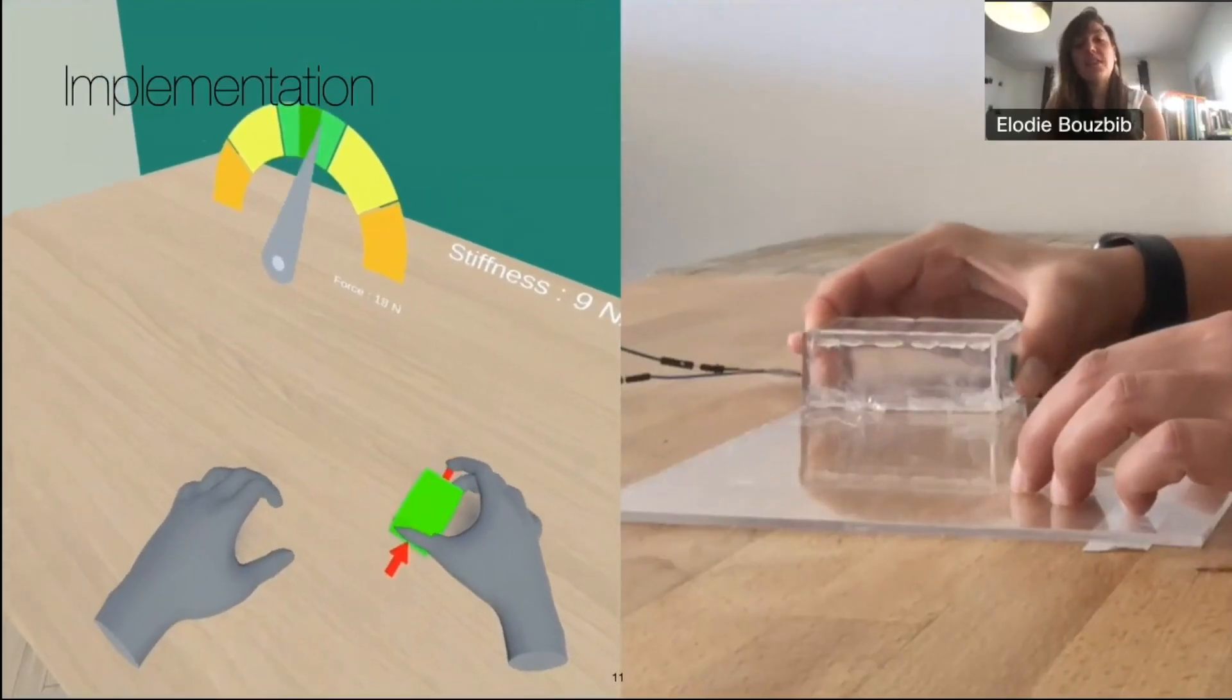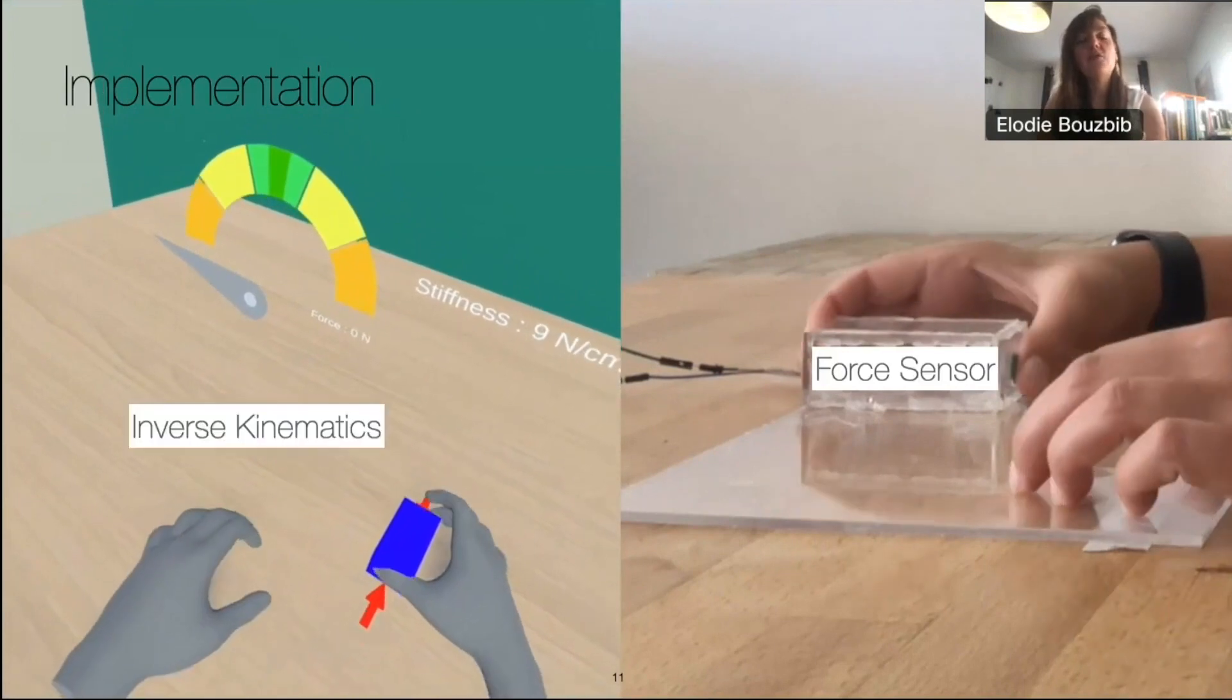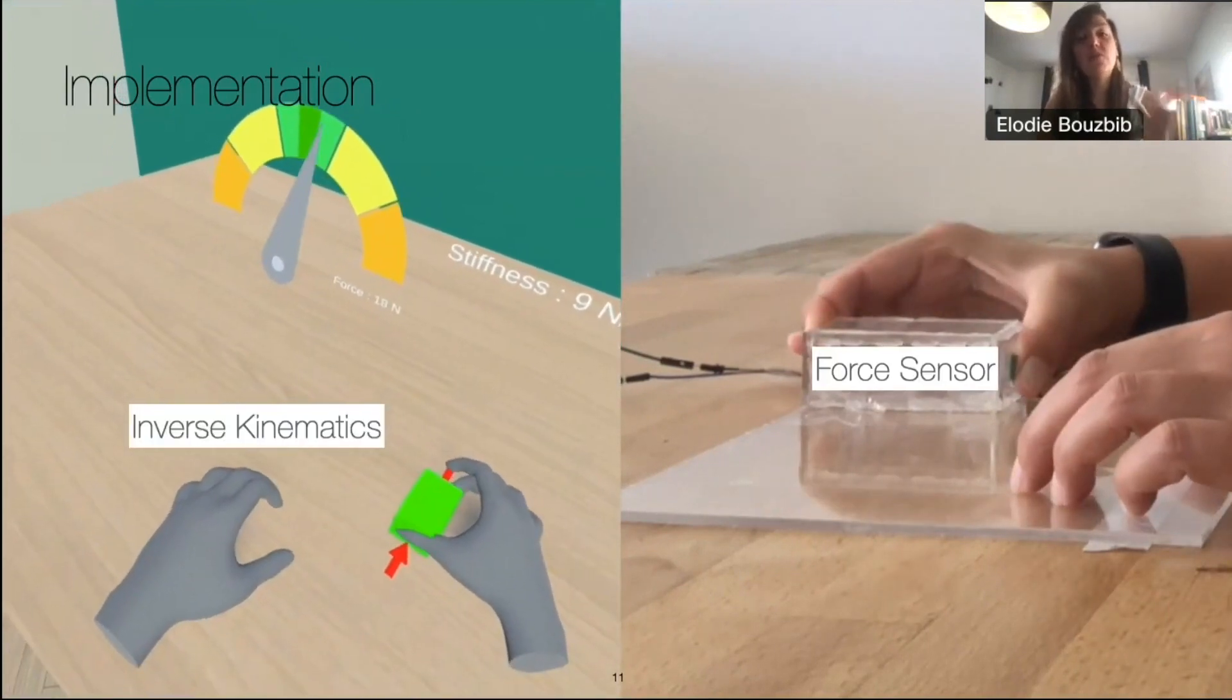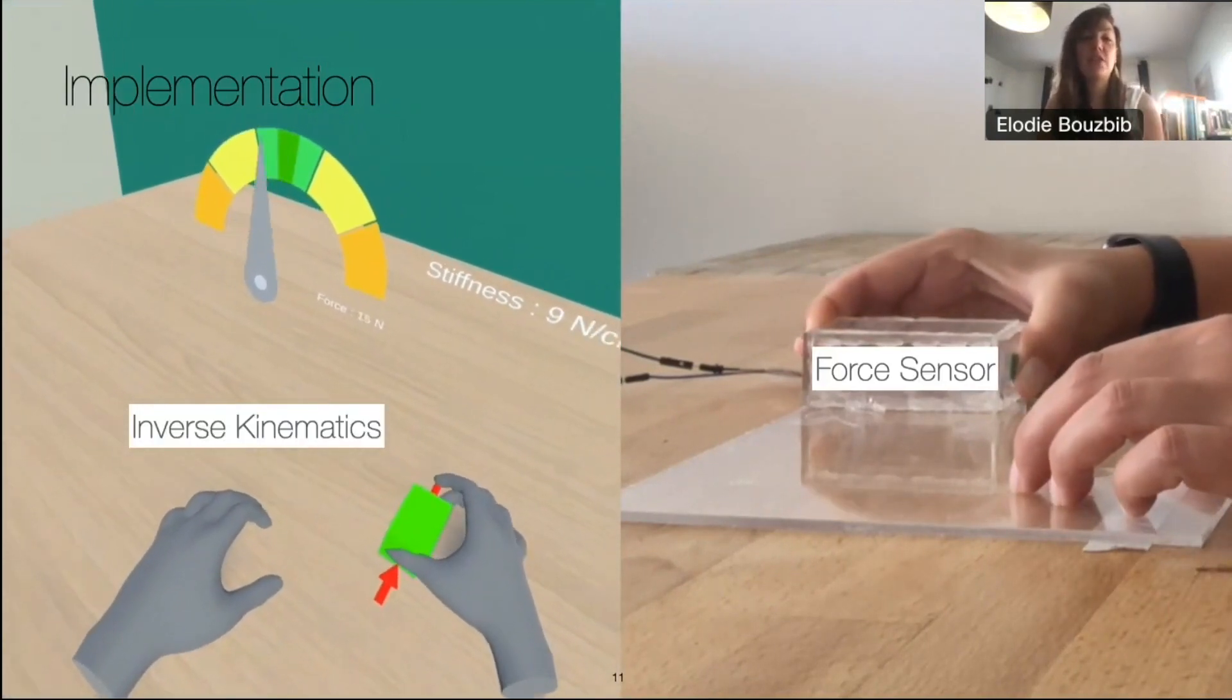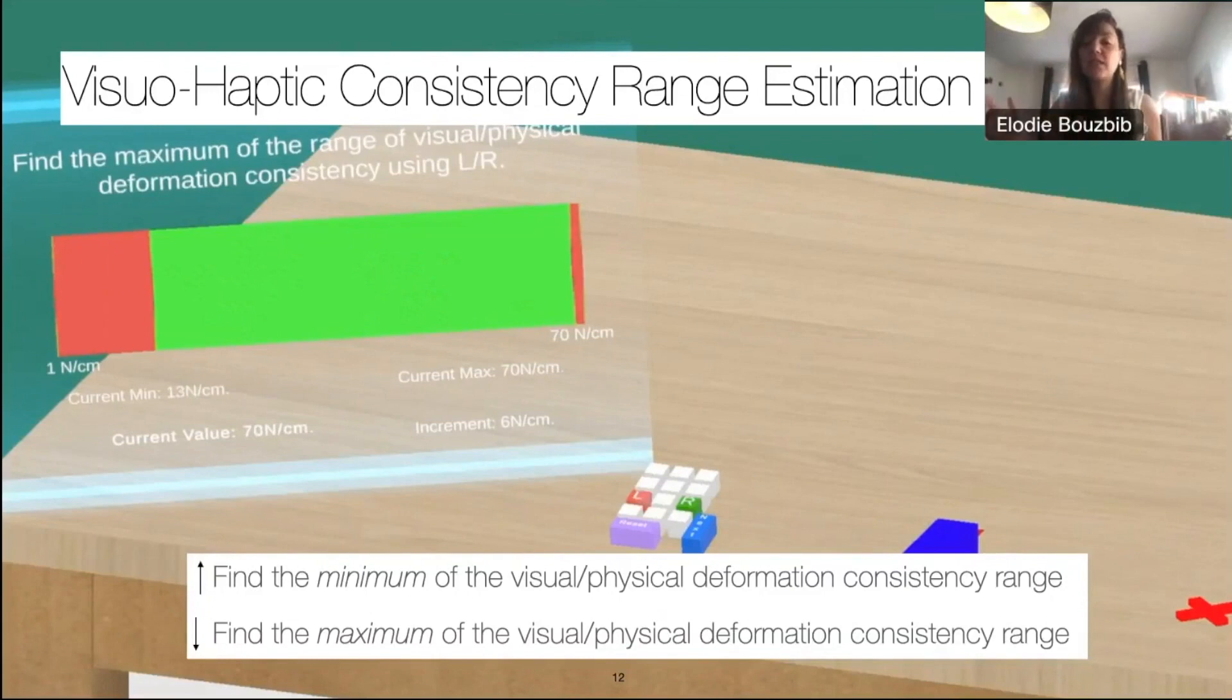We only used a simple force sensors where participants could apply pressure and inverse kinematics on their virtual hand representation for the grasp interaction to be believable. We conducted a preliminary study to refine the visual haptic consistency range where participants knew about the haptic illusions that were induced.